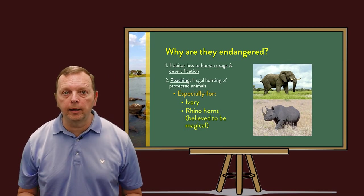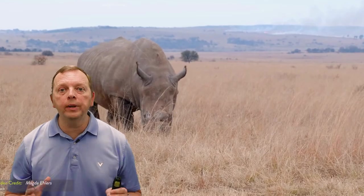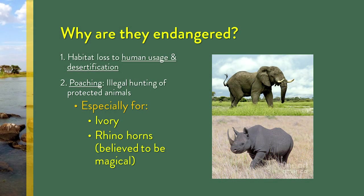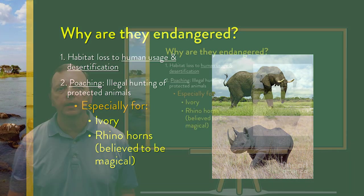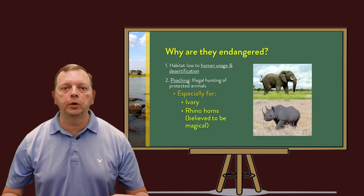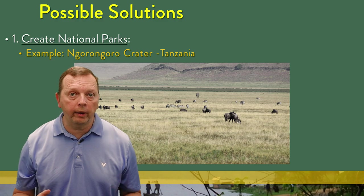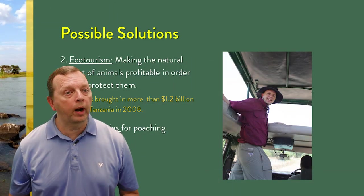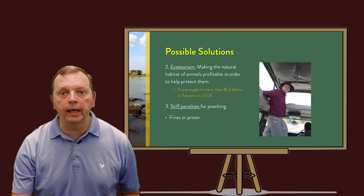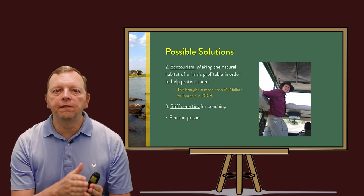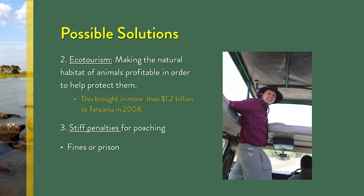Something else Africa has a lot of is endangered animals. Animals such as elephants, black rhinos, and mountain gorillas are all endangered and face extinction. There are two major reasons for this. First, these animals are losing their habitat to desertification — which we'll talk about in a few moments — and due to human settlement. The second reason is poaching, which is the illegal hunting of protected animals. Ivory from elephants or horns from rhinos command very high prices around the world. To combat these threats, there are three things African countries are doing: establishing national parks to protect animals' habitat, such as the Ngorongoro Crater in Tanzania; ecotourism, where fees paid to tour guides partly fund conservation efforts; and the enforcement of strict penalties for poaching, including fines or even prison time.